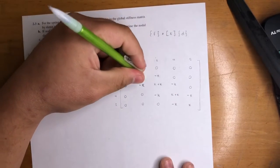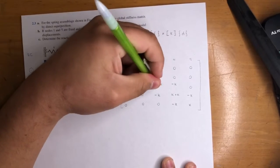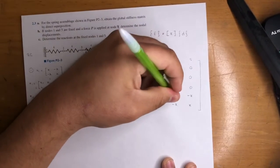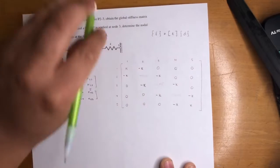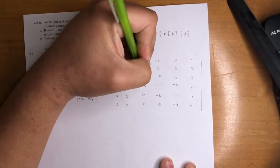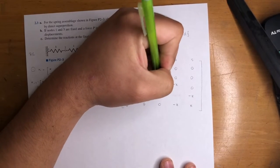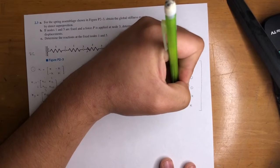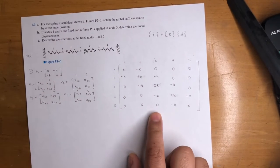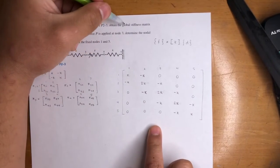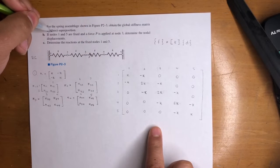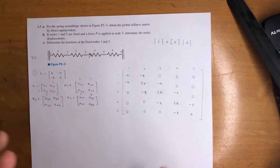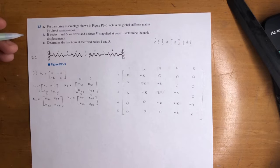Then I'm just going to combine these Ks right here, 2K. Then this is going to be 2K, then 2K right here. Just to make it nicer. 2K, 2K, 2K, 2K. Cool. So that's the answer to part A, the global stiffness matrix by direct superposition. Just pretty much combining them.